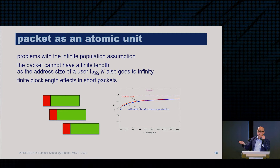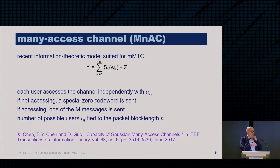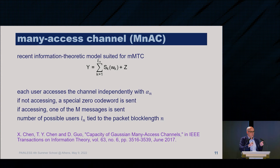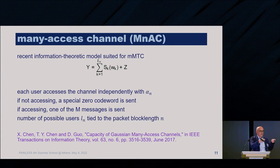When packets are small, as in MMTC, there is a finite block-length effect — the whole theory of finite block length developed in recent years. Several information-theoretic researchers noticed this problem and fixed the model. One approach is called the many-access channel: users send one of M messages, and the number of possible users is tied to the length of the field encoding the user address. They show the system behavior with respect to a reserved number of symbols, and unsurprisingly this length should scale as log₂ of the number of users.